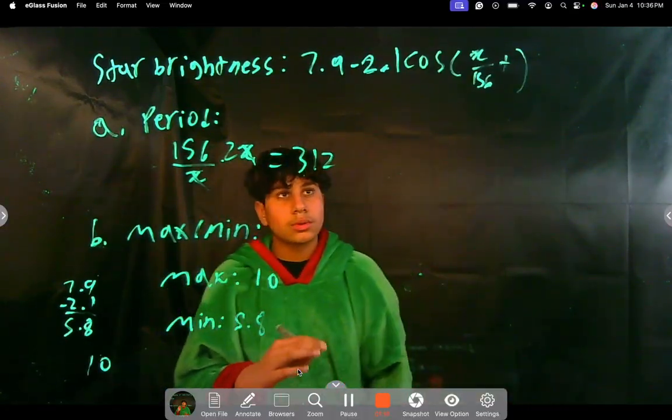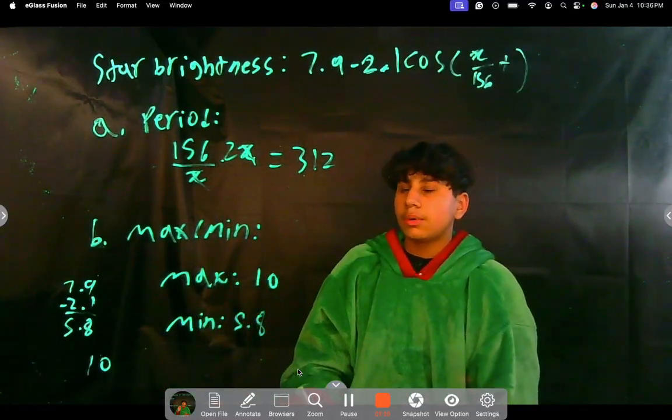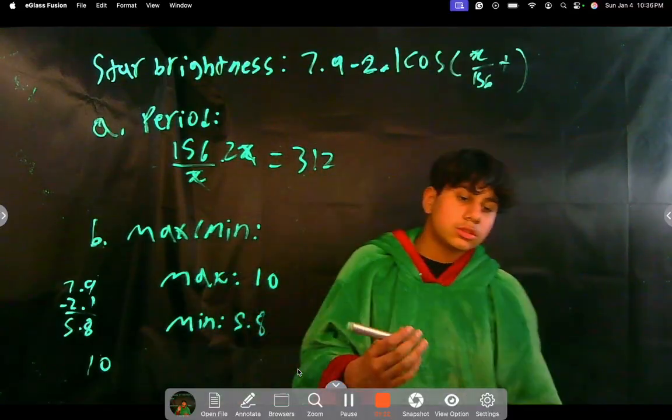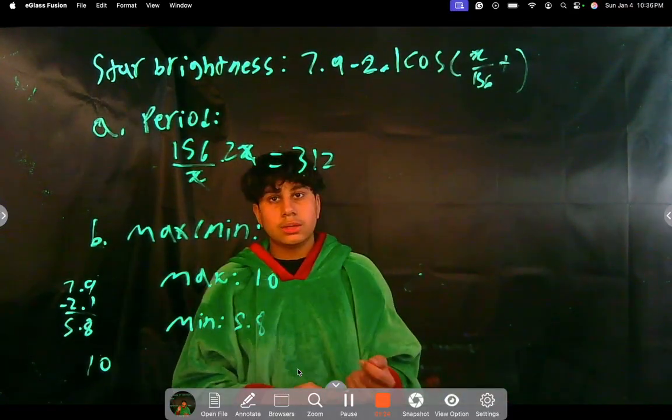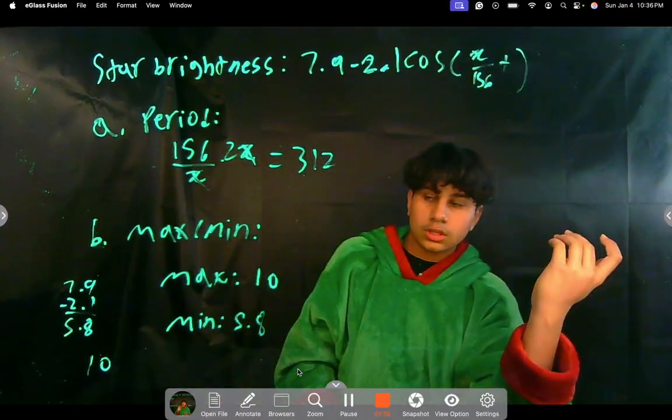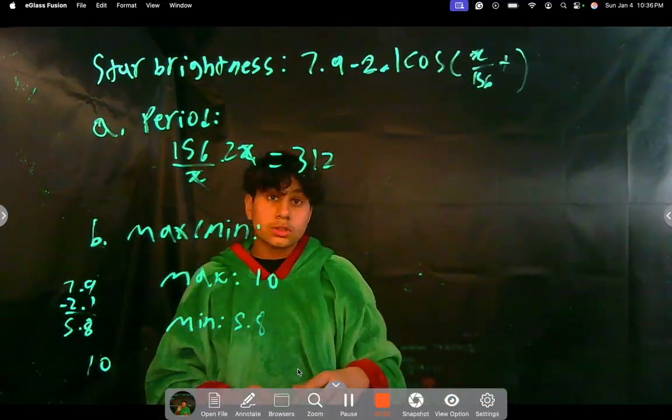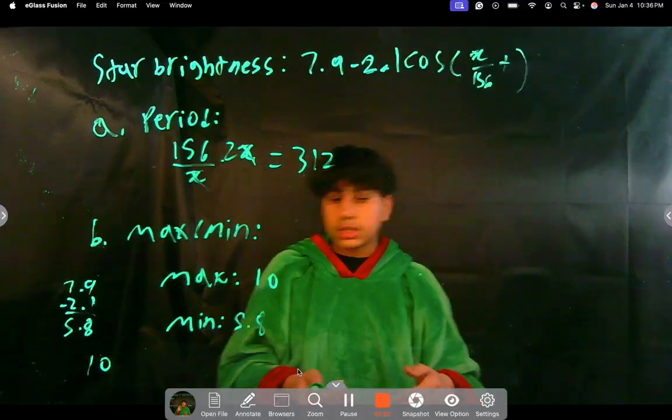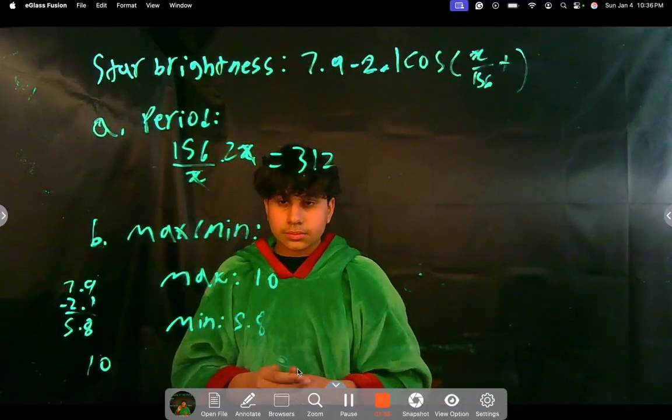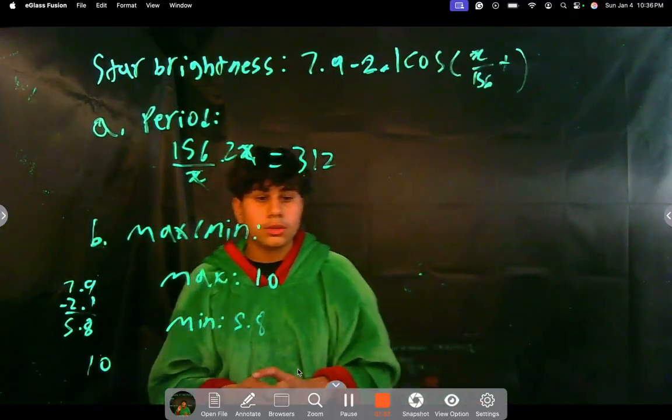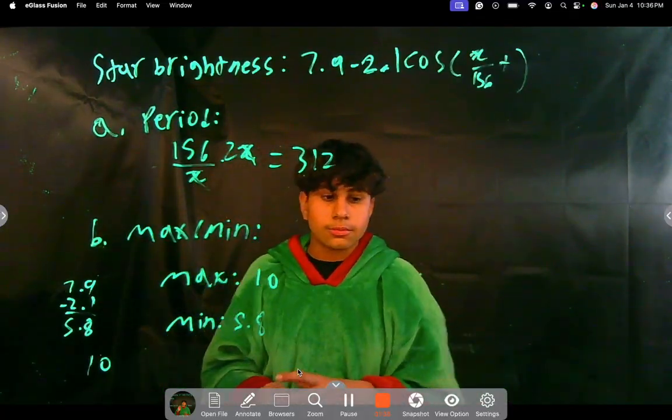Really you can do it with decimals too. We haven't done many problems using decimals, but it really just follows the same case no matter how big the numbers in the horizontal dilation. You can solve with the same properties. And that's how you solve for period and maximum and minimum really fast.